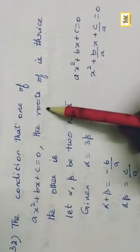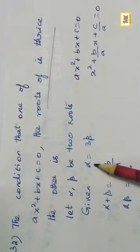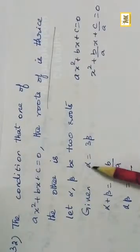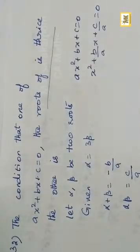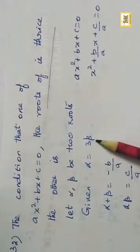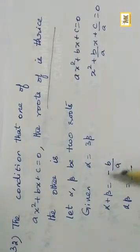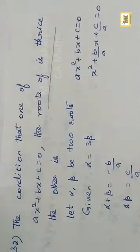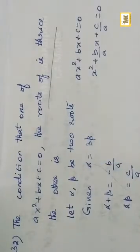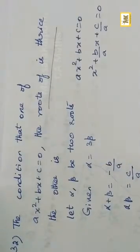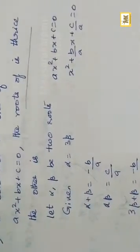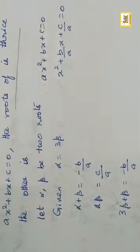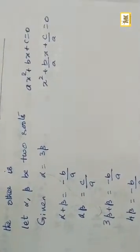Question 32: One root is thrice the other. Let alpha = 3·beta. Sum of roots = -b/a: 3·beta+beta = -b/a, so 4·beta = -b/a, giving beta = -b/(4a).